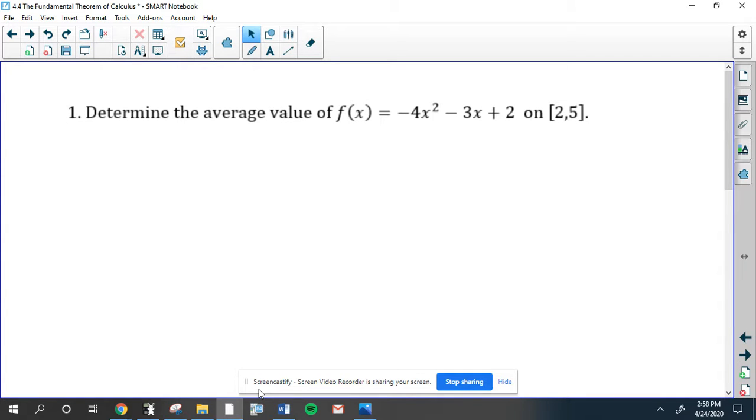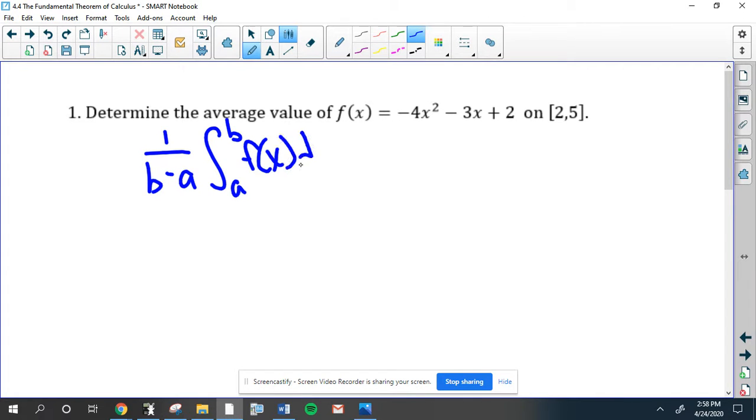So we're going to take the formula 1 over b minus a times the integral from a to b of f(x) and plug everything in.